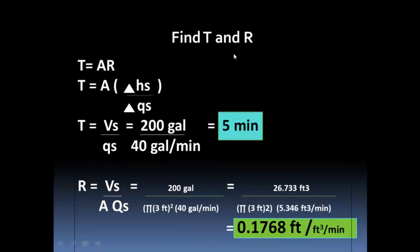To solve the problems — whether there will be overflow and for plotting the graphs — we need to find tau and R. Using τ = AR, tau equals A times ΔH_s/ΔQ_s. Since area multiplied by height equals volume, tau equals V_s/Q_s. The initial volume is 200 gallons and the flow rate is 40 gallons per minute for both entering and discharge, so tau equals 200/40 = 5 minutes. This means by the 5th minute, the 200 gallons will be reached at a 40-gallon-per-minute rate.